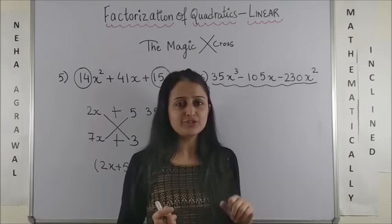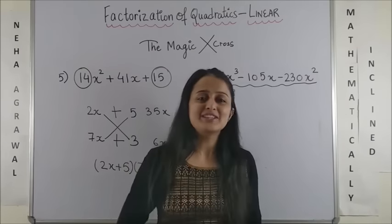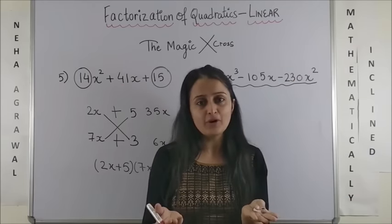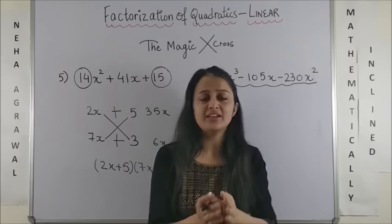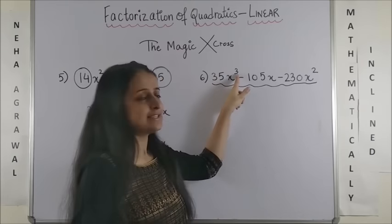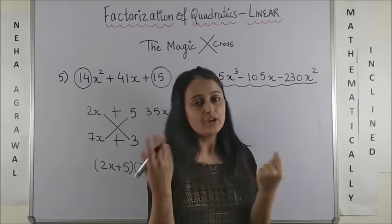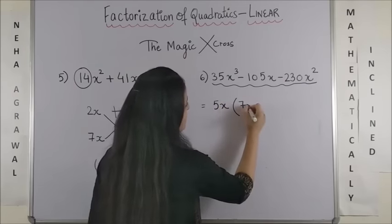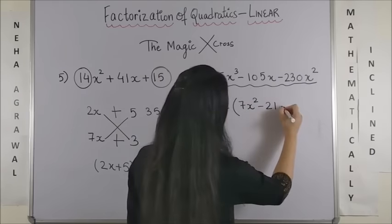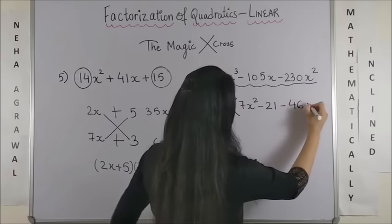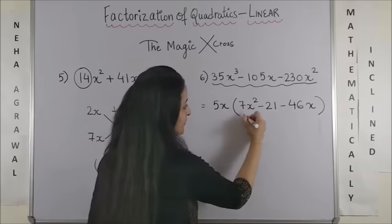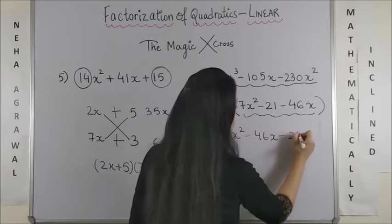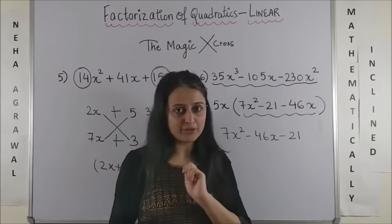If you look at question 6, it looks very intimidating. But trust me, it is not very difficult. First thing you should do is try to take anything common if you can find a common factor because that is going to make your calculations very simple. As it is, you realize it's a cubic equation and not a quadratic. So, that means you will have to take 5x common. This becomes 7x squared. This becomes minus 21 and this would become minus 46x. Let's rearrange because we are only interested in this.